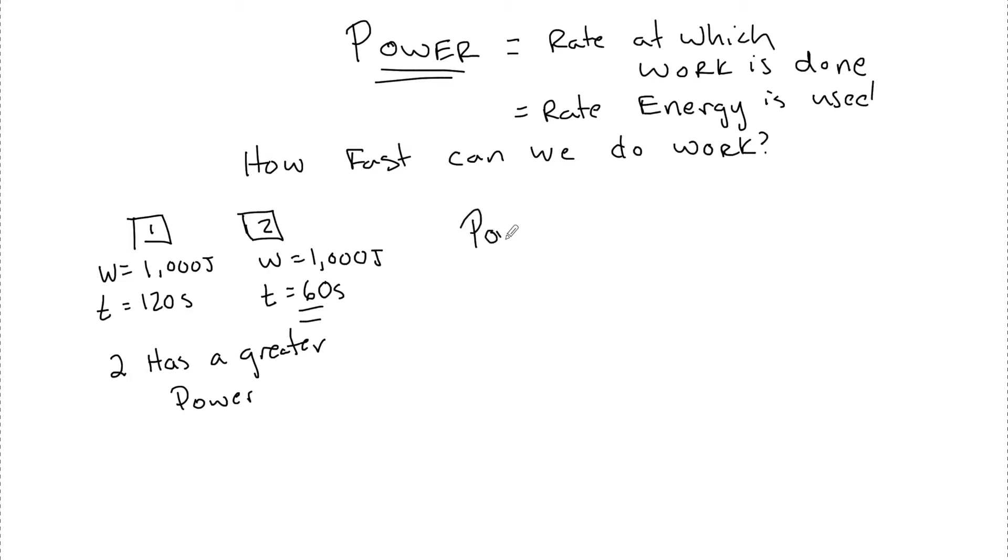So if we look at this in terms of symbols, we have power is the rate at which we do work. So we say that P equals W over T. And power has a unit of Watt, capital W. And we have to remember, don't confuse this with work.